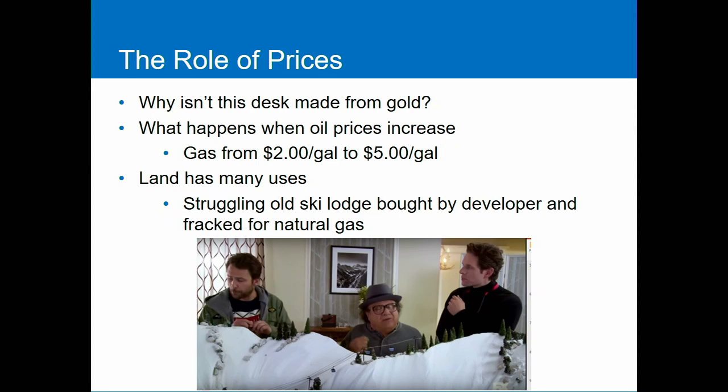The example I gave at the end of last class was from It's Always Sunny — the episode 'When the Gang Hits the Slopes.' There's an old ski lodge called Party Mountain that was popular in the 80s but had gone downhill. Frank comes in, buys it, and ends up fracking the mountain. It didn't have much use as a ski lodge anymore, but it had valuable natural resources underneath — much more valuable to consumers than a crappy, falling-apart ski lodge. Because he saw the high value he could get for the natural gas, he had an incentive to purchase it and provide those goods. And they end up making people better off.